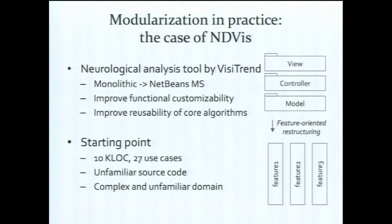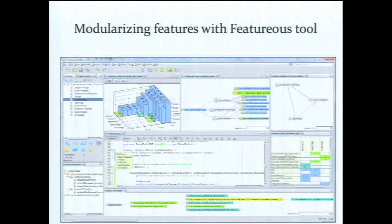The starting point was that the application was quite small — only 10,000 lines of code and 27 use cases. What made the transition quite problematic was that the code base was unfamiliar to us when we started, and the domain — neurological analysis — I still don't really understand it. But this didn't prevent us from modularizing the software. We used the Futuris tool, which is a plugin to the NetBeans IDE, building on its libraries and integrations with the code editor. You can also find it online with the sources and play around with it.